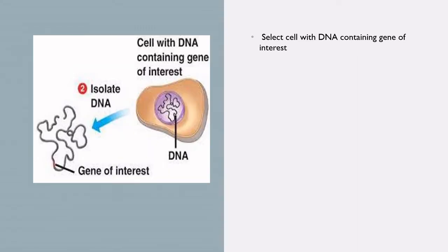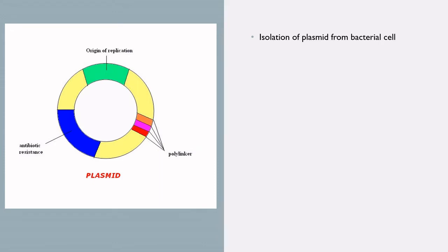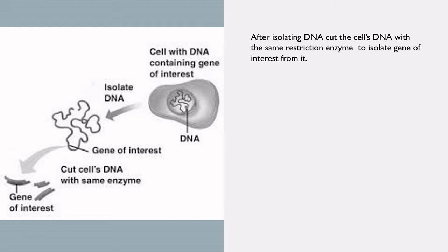To incorporate a donor DNA fragment into a suitable vector, first we need to select a cell with DNA containing the gene of interest, isolate the DNA from that cell, and extract the gene of interest. We also need to isolate the plasmid from a bacterial cell. Unlike the much larger bacterial chromosome, plasmids are quite resistant to permanent denaturation. The steps in plasmid isolation are: lysis and denaturation, followed by neutralization and centrifugation.